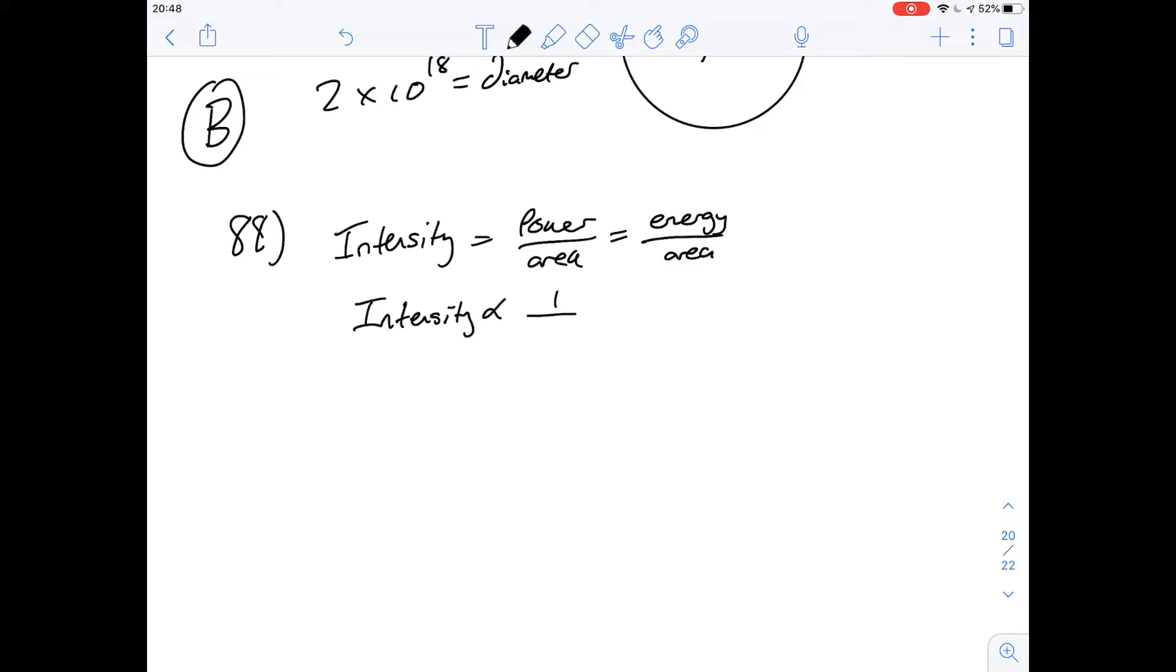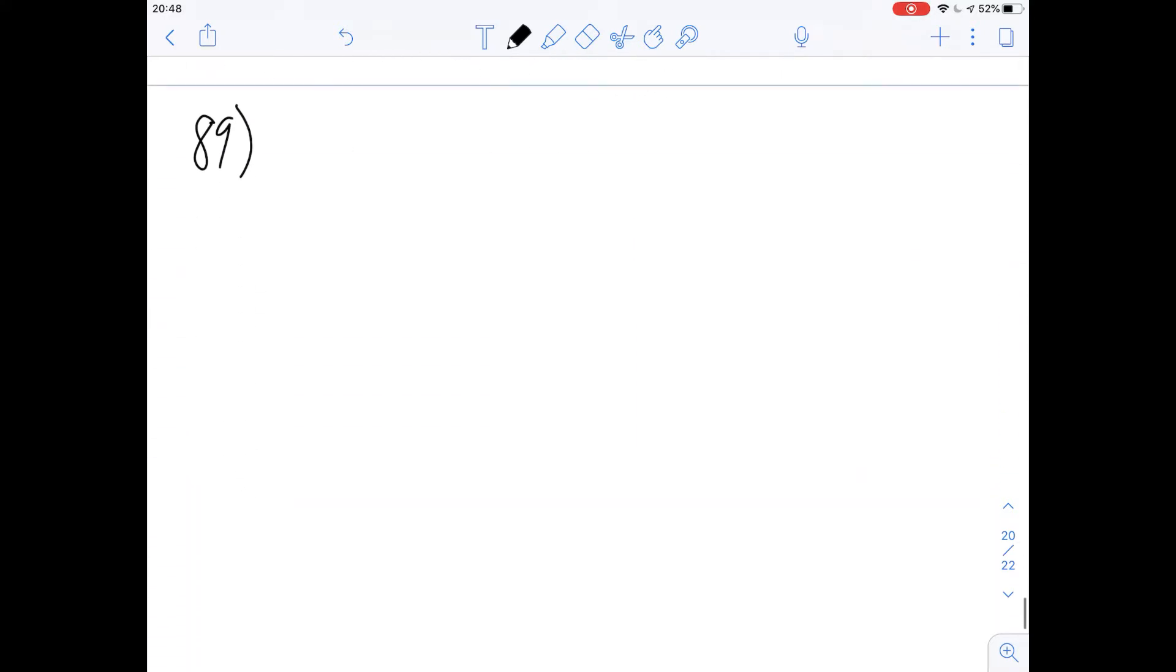We can simplify this a little bit and say that intensity is going to be proportional to 1 over area. So then if we relate area to the radius, we can say intensity is going to be proportional to 1 over the radius squared. And that gives us an answer. We're told that these signals lose intensity at a rate inversely proportional to the radius of the radio bubble squared. And that gives us an answer of C for question 88.